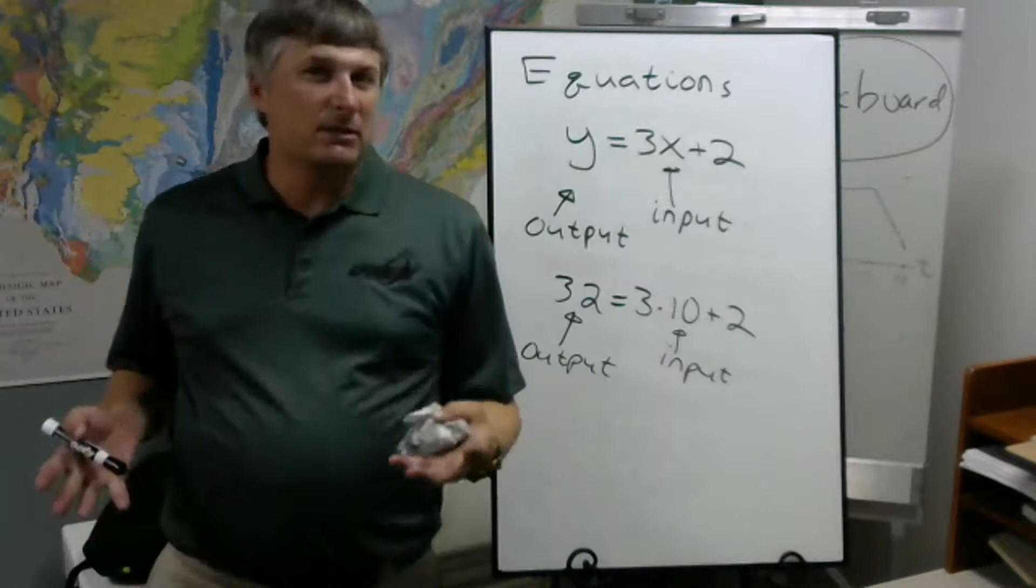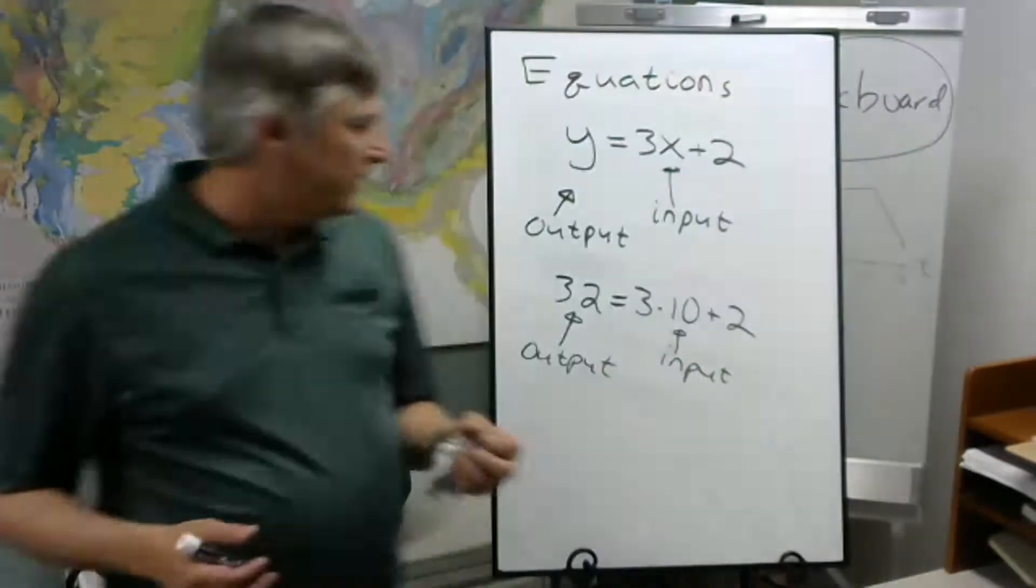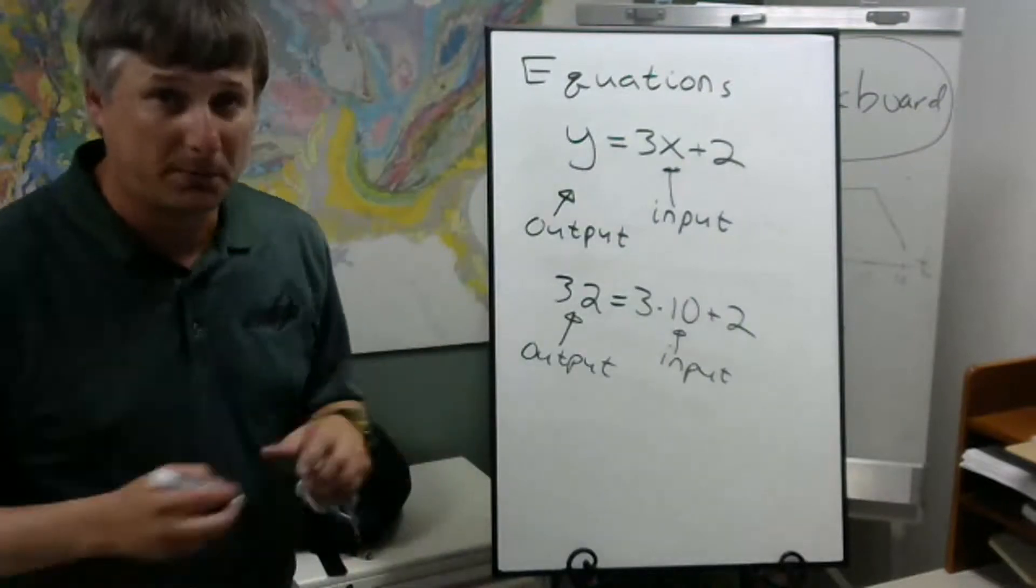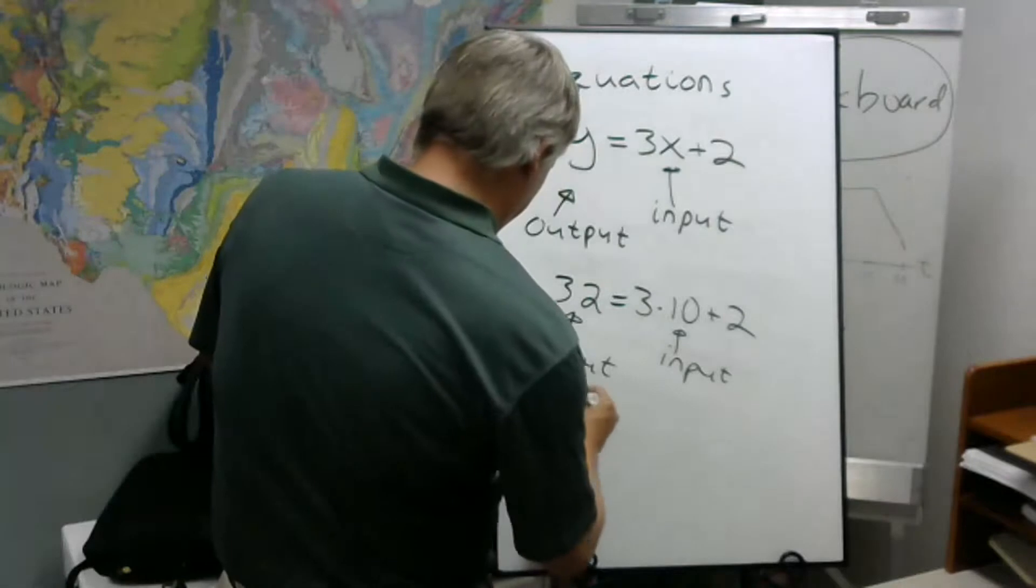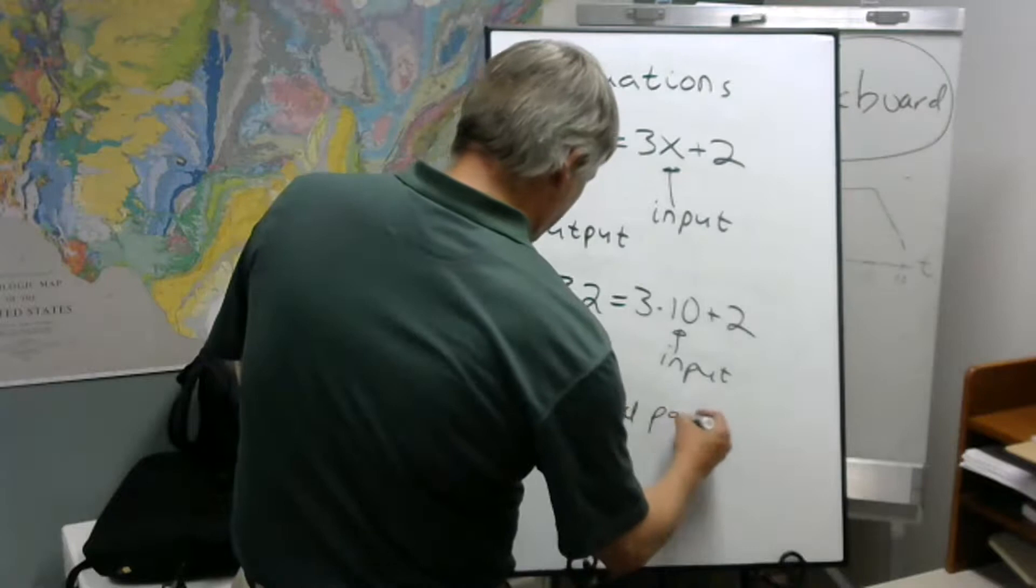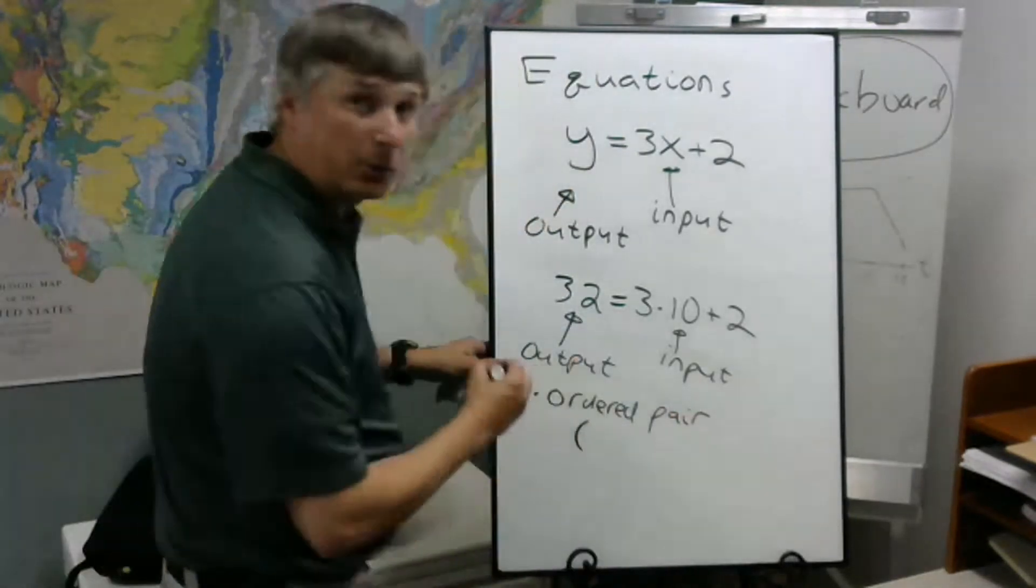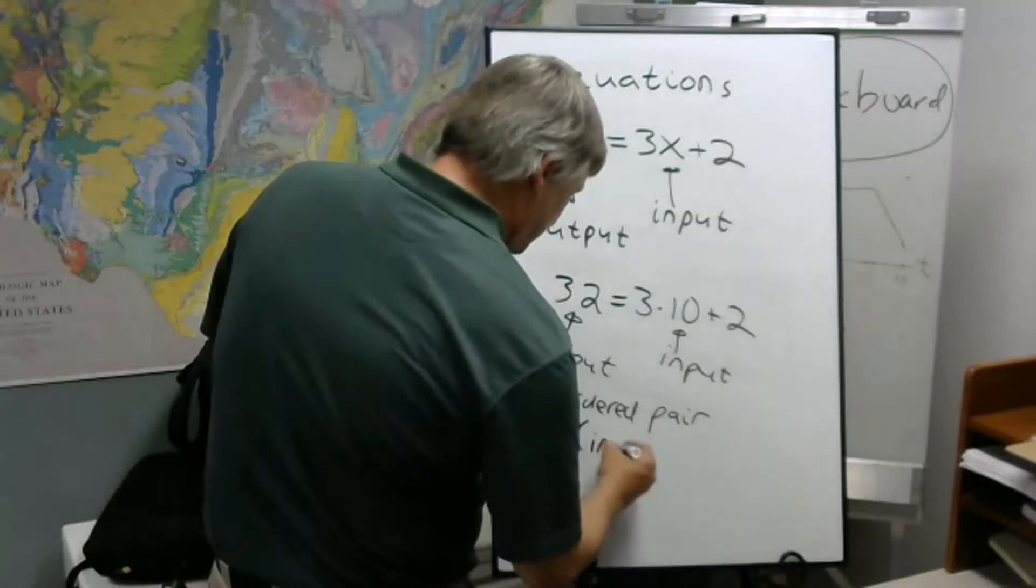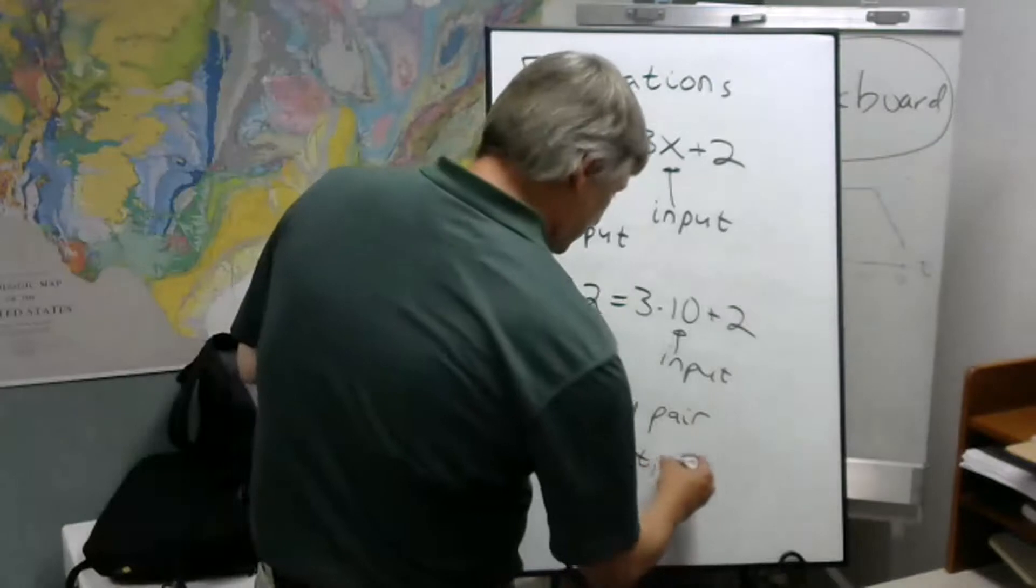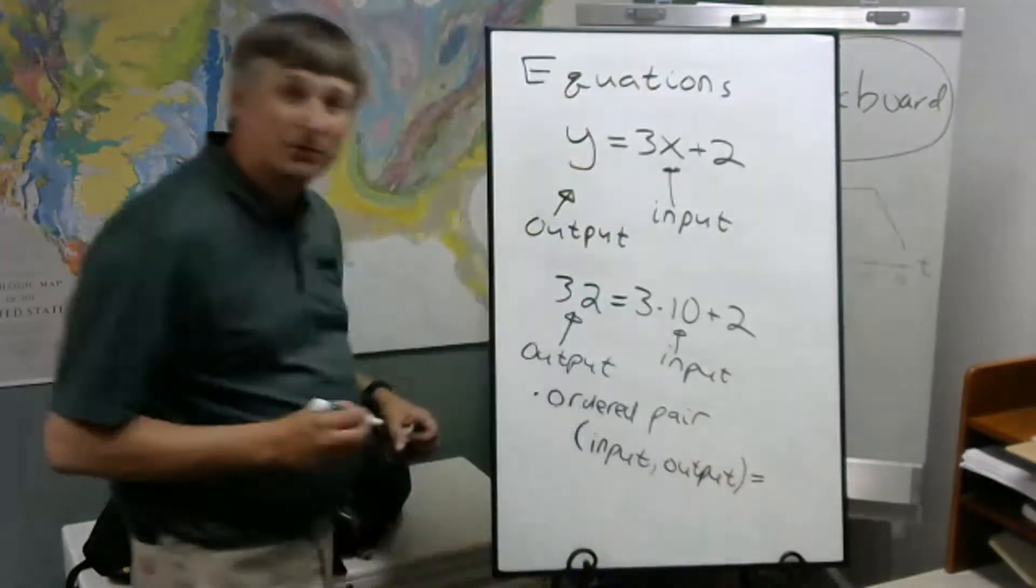This is our idea of equations. Now typically what we do is we try to keep track of the input and the output, and we call this an ordered pair. In an ordered pair, the input is always first and the output is always last.